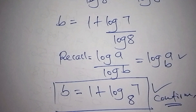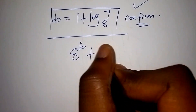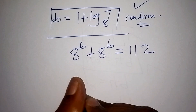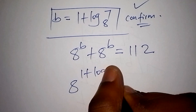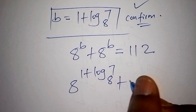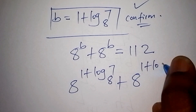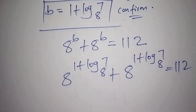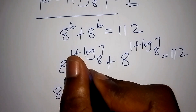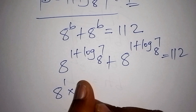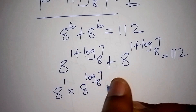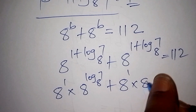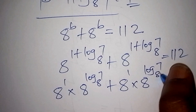When confirming, we had 8 to the power of b plus 8 to the power of b equals 112. Instead of b, we substitute 1 plus log of 7 to the base of 8. So 8 to the power of 1 plus log of 7 to the base of 8, plus 8 to the power of 1 plus log of 7 to the base of 8, should give us 112. Using exponent rules, the plus becomes multiplication: 8 to the power of 1 times 8 to the power of log of 7 to the base of 8.